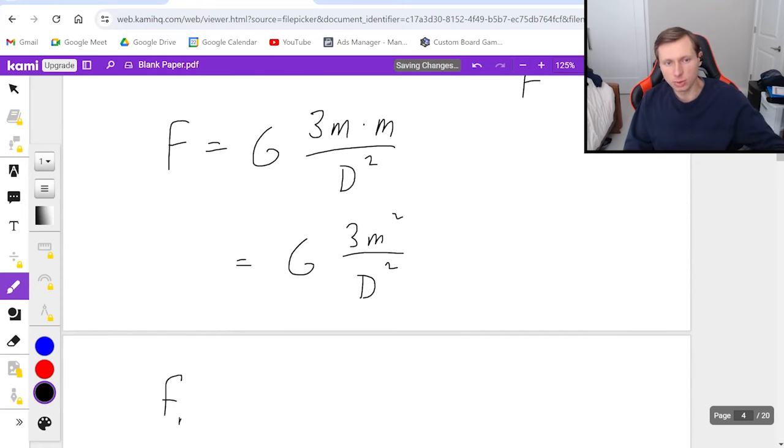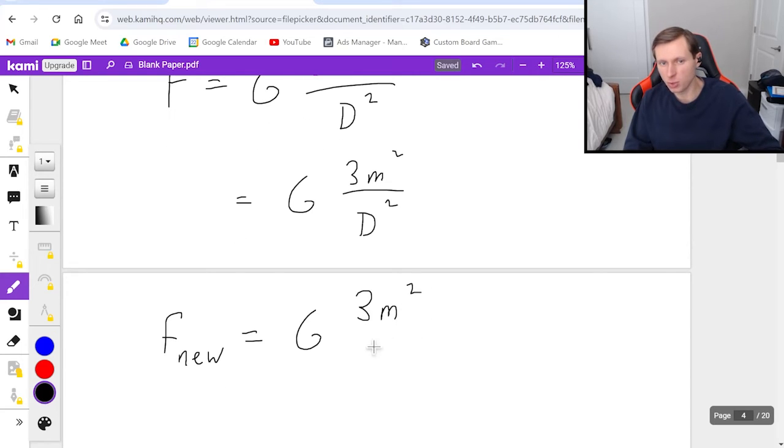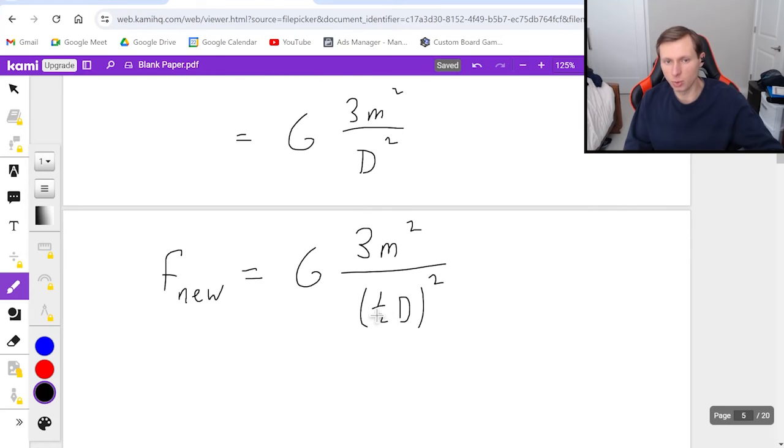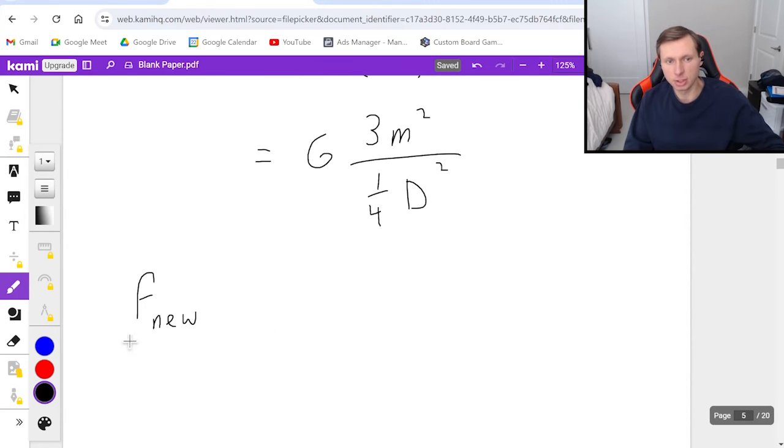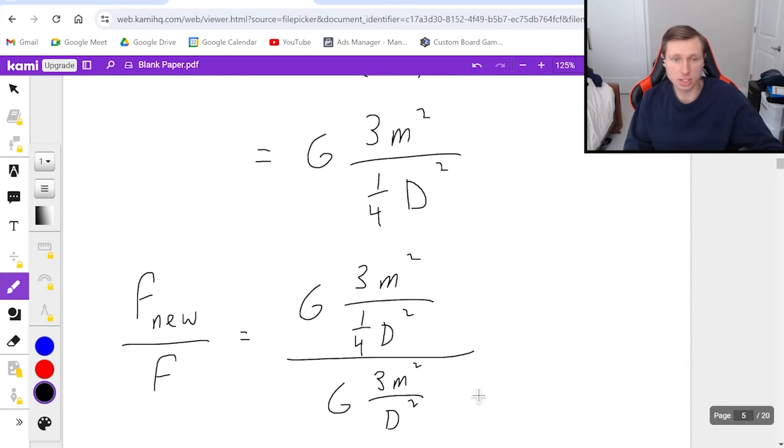Now to find F new, the new force, it's going to be capital G times, the masses didn't change, so still 3m squared, but now the distance changed. Now the distance is 1 half D squared. And yes, that does have to go in parentheses, because I'm going to be squaring both the 1 half and the D, giving me G times 3m squared divided by 1 fourth D squared. And now all I got to do is divide F new divided by the original. That will get me my change in force. So I'm going to write G times 3m squared over 1 fourth D squared divided by G 3m squared D squared. So that's the new divided by the original.